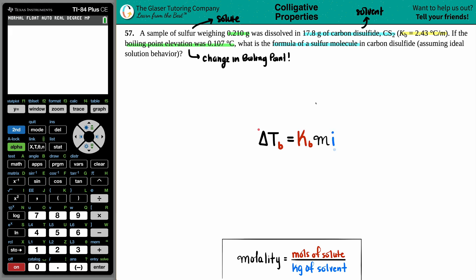That is this one right here. Delta Tb equals Kb times molality times i. The delta Tb is the change in the boiling point. So we know the change in the boiling point, also known as the boiling point elevation, is 0.107 degrees Celsius. So we have this number. The Kb value is what they gave us here, the boiling point constant for the solvent in this case is 2.43 degrees Celsius per molality. So we have this number.